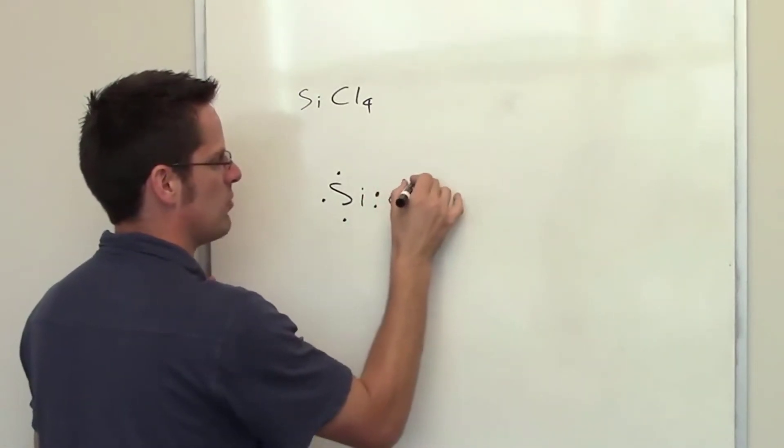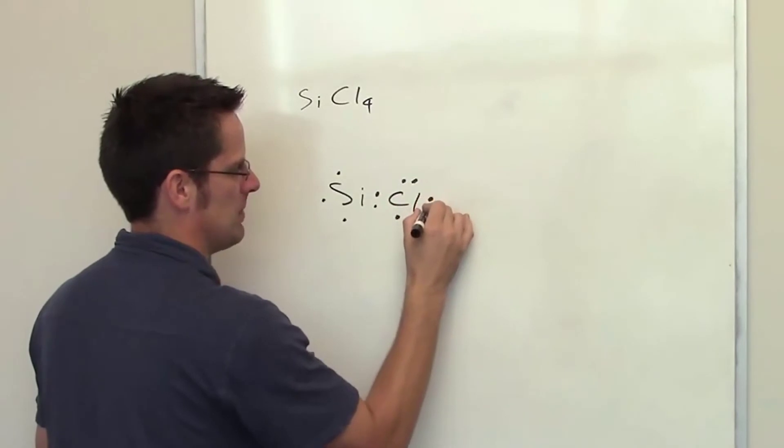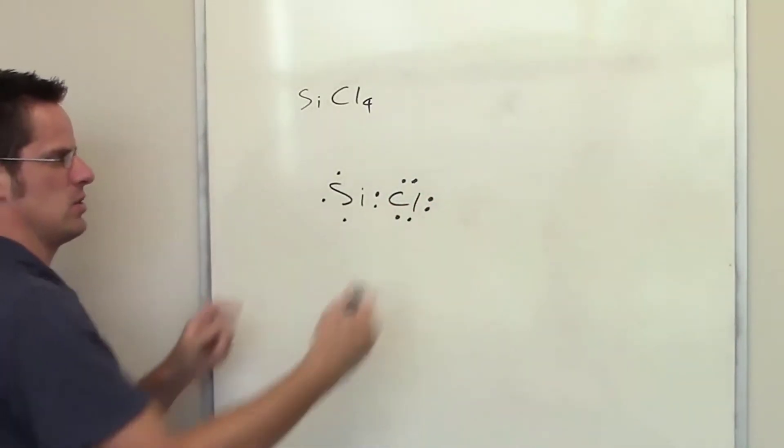This is one chlorine atom forming a covalent bond with silicon. Hopefully that makes sense. They just plug each other's holes.